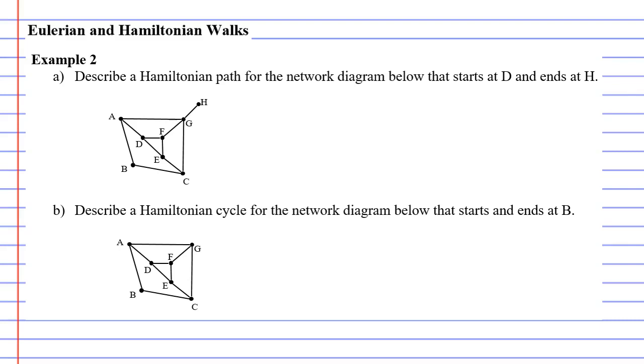Now, remembering that the only way you can do this is just to trace it until you find one. So question A says, describe a Hamiltonian path for the network diagram below that starts at D and ends at H.